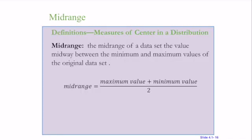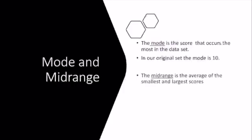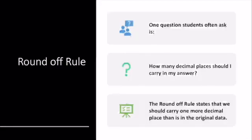Mid-range is when I take my maximum value and my minimum value and I divide it by two to find the middle, the middle of our range. The mode is the set score that occurs most in our data set. In our data set, the mode is 10 because 10 occurred twice. The mid-range is the average of the smallest and largest scores. Our smallest score is nine, our largest is 21. If we add those up and divide them by two, we get 15.